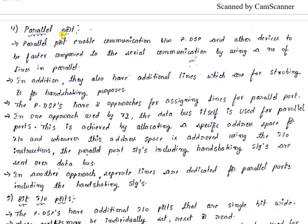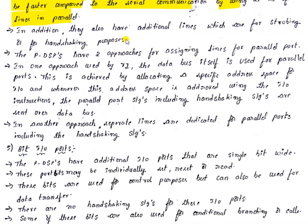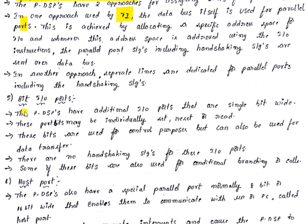The parallel port enables faster communication between the programmable DSP and other devices compared to serial communication, by using a number of lines in parallel. Additional lines are provided for strobing or handshaking. In one approach used by TI, the data bus itself is used for parallel ports by allocating a specific address space for I/O, addressed using I/O instructions.